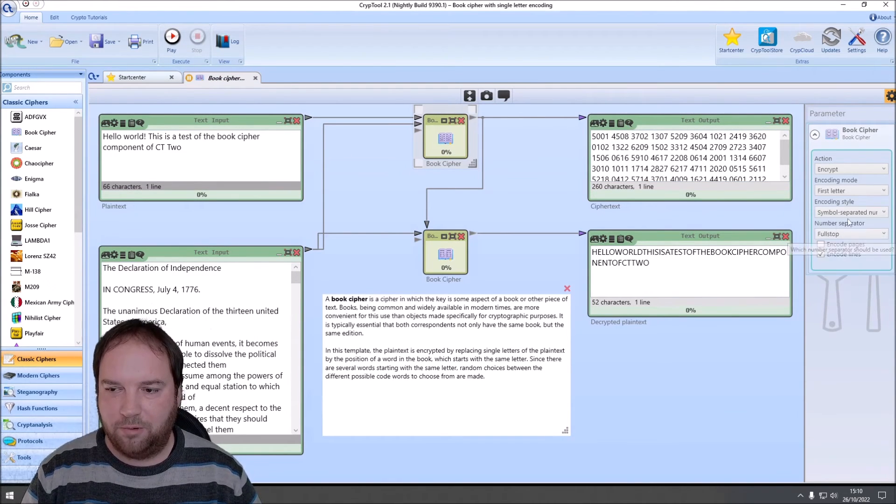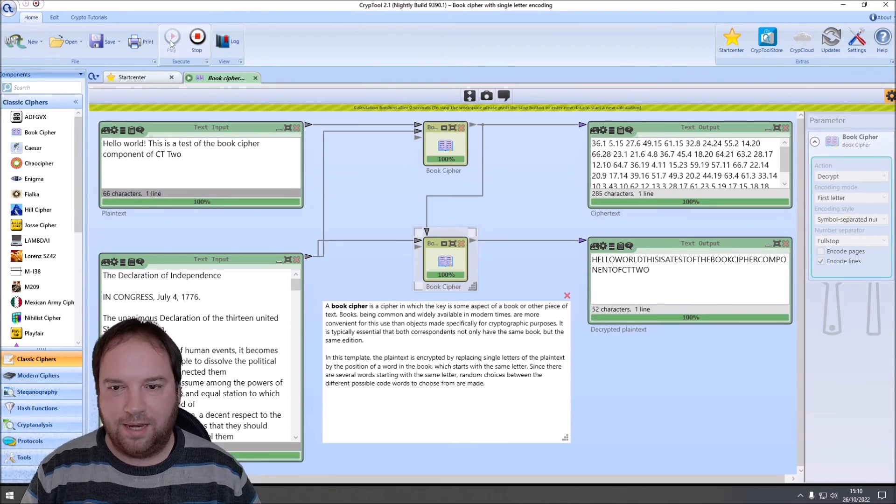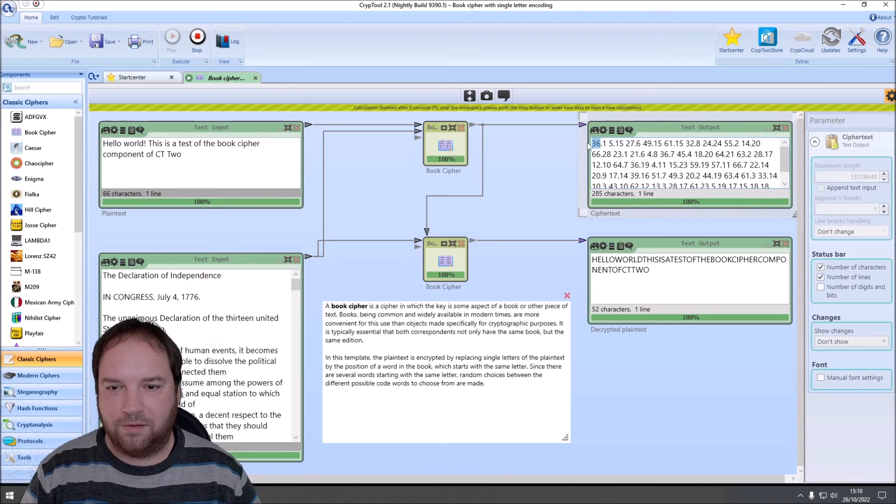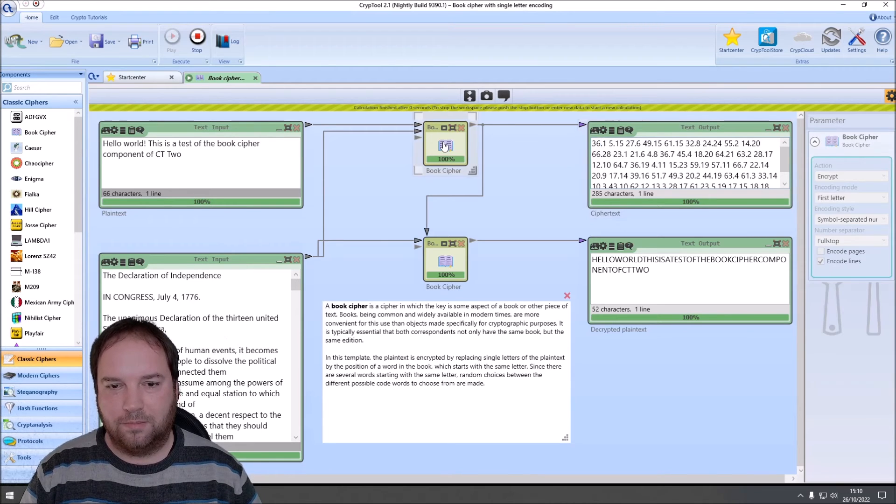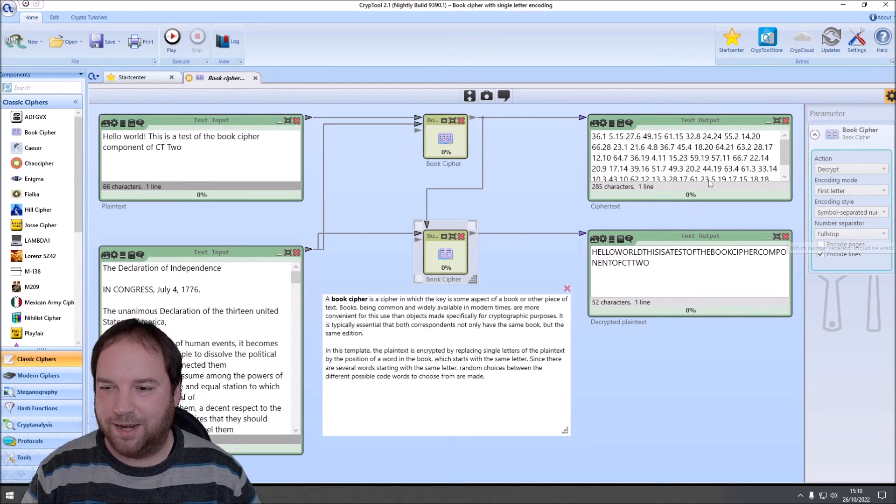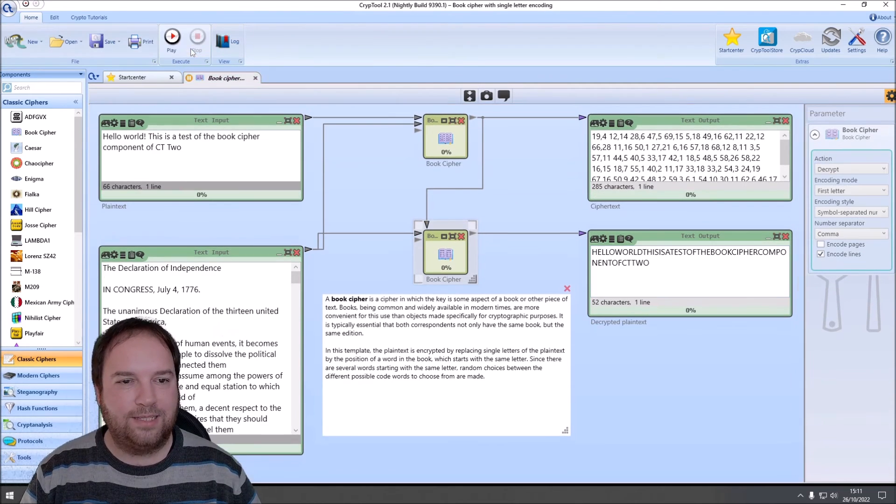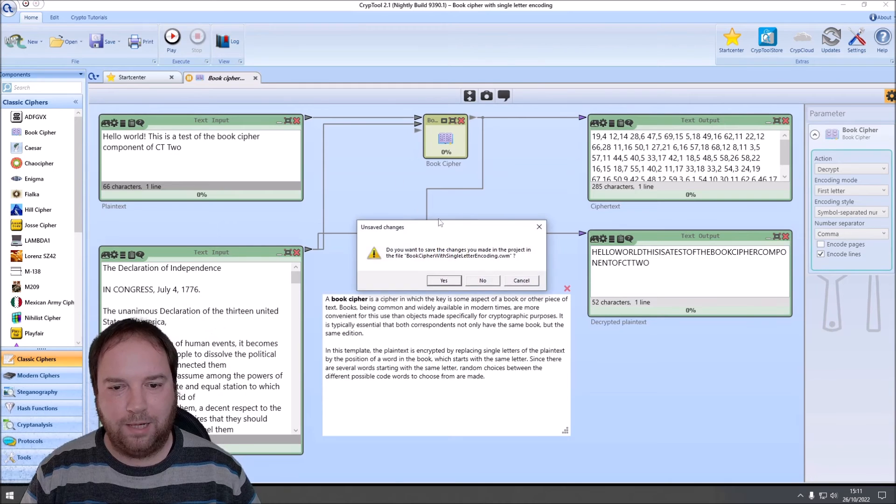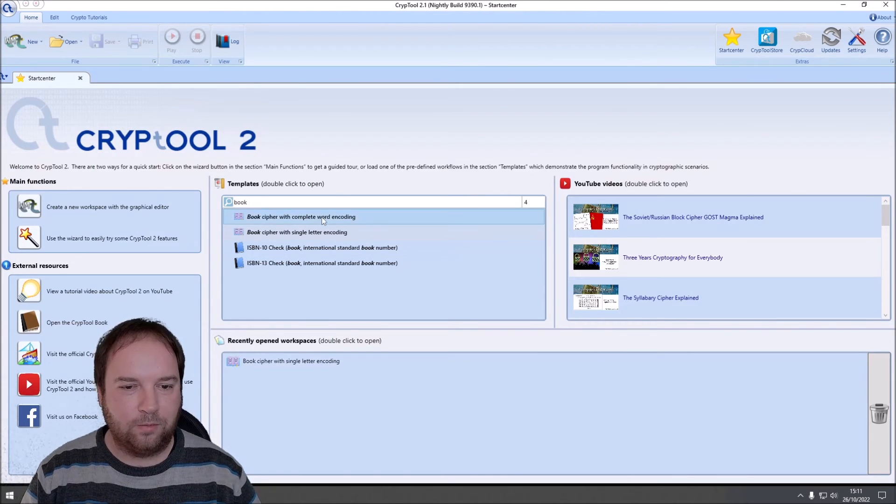We can see here, this is the 15th line with the first word. Then we have the 45th line with the 8th word and so on. You can also change this here, the encoding style, to symbol separated numbers. And here again, to symbol separated numbers. And then you can see that we have the numbers here separated by a dot or a full stop. And of course, we have to do the same here. This is why we can encrypt and decrypt. Then we can change the full stop, for instance, to a comma and the full stop to a comma. And it still works.